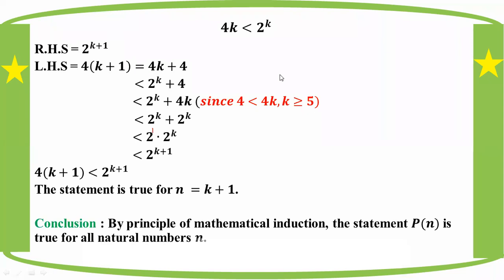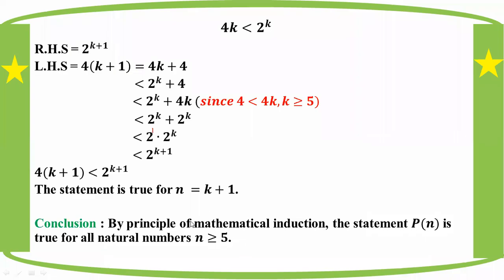Conclusion: By the principle of mathematical induction, the statement P(n) is true for all natural numbers n greater than or equal to 5.